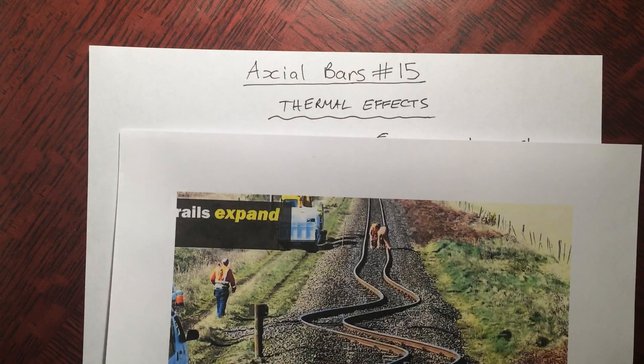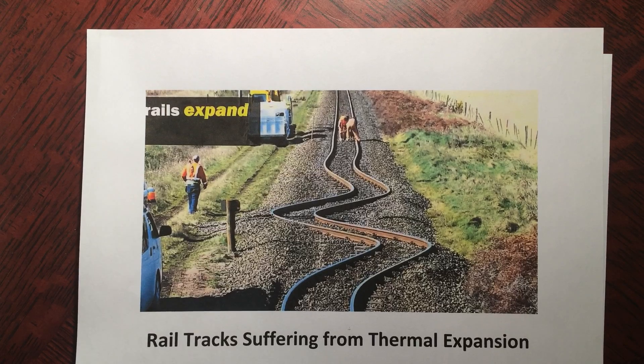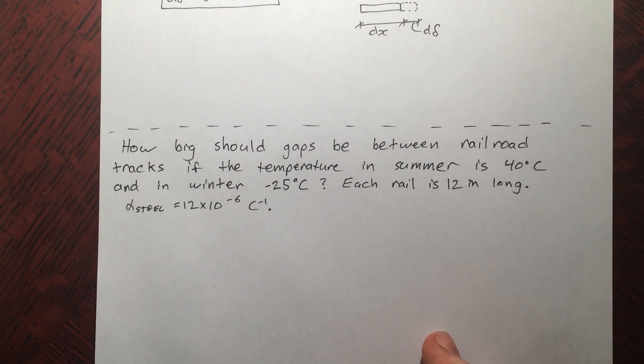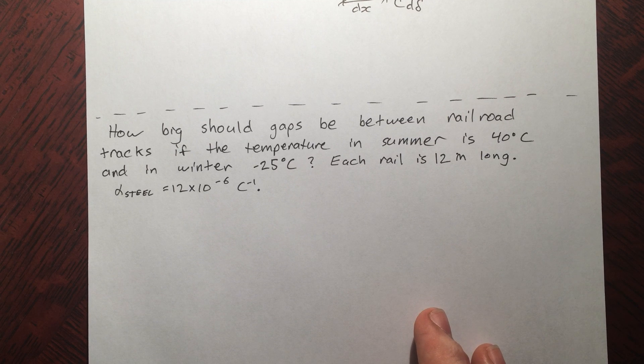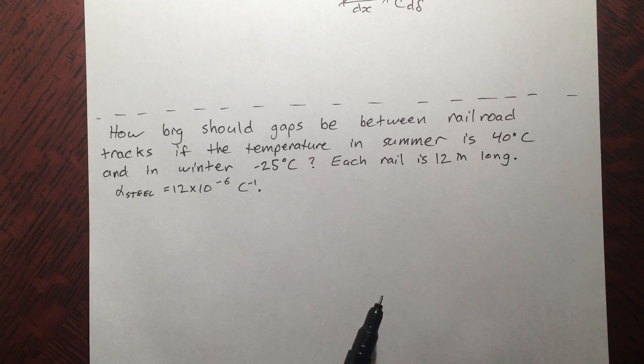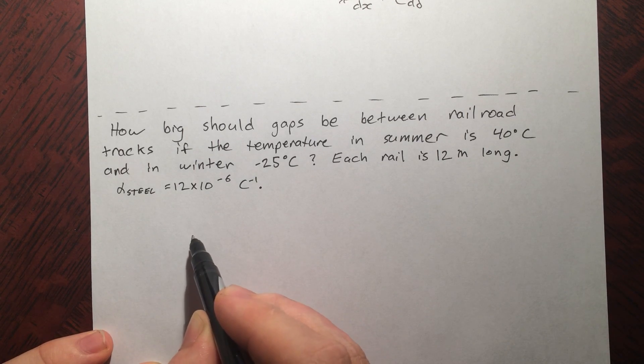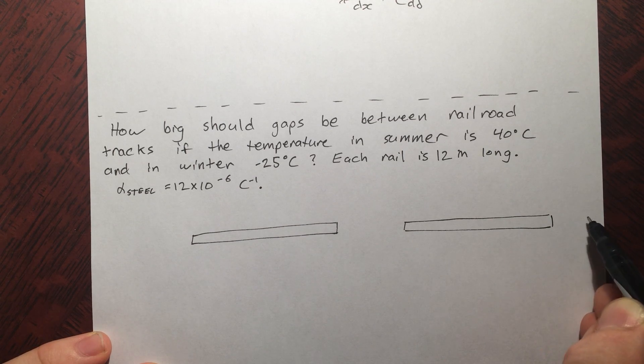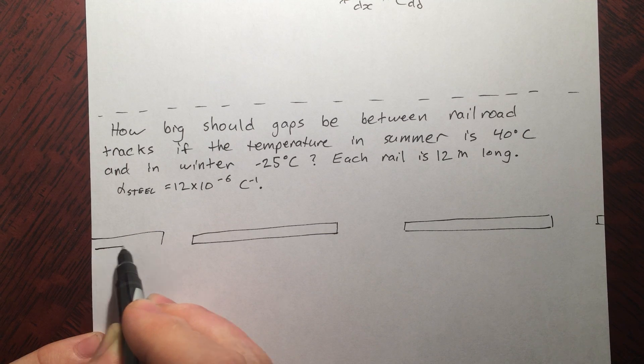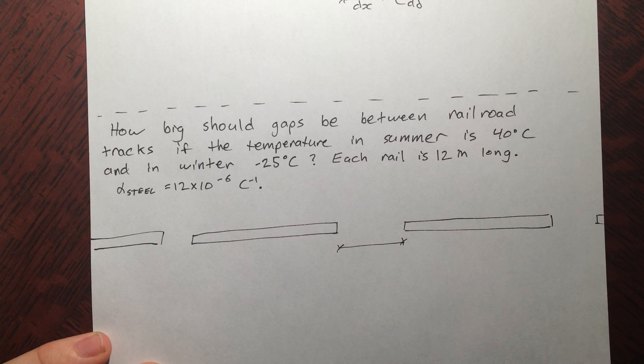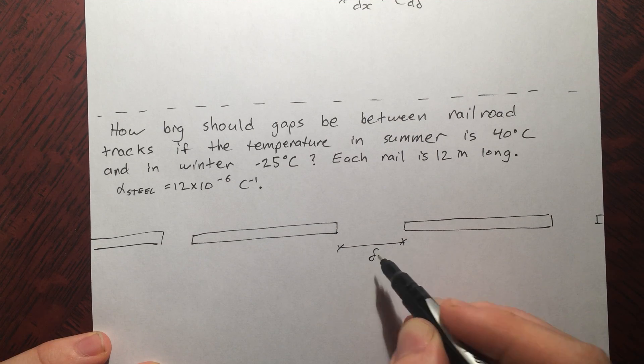So back to our railroad tracks. Let's just solve a quick, relatively simple question that has to do with the spacing. What's the spacing got to be? How big should the gaps be between railroad tracks if the temperature in the summer is 40 degrees and in the winter it drops to negative 25? Assume each rail is 12 meters long and the coefficient of thermal expansion is 12 times 10 to the minus 6. So you can imagine we're laying out a series of bars. One bar will be like this, we'll have a gap, I'll draw it noticeably bigger, and a bunch of bars just going on and on like this. And this distance here is the distance we want.